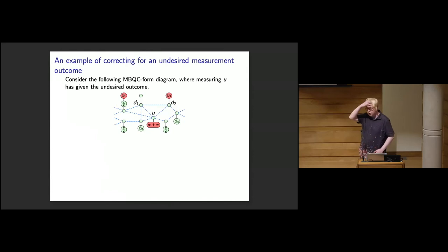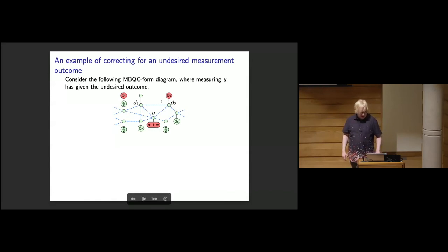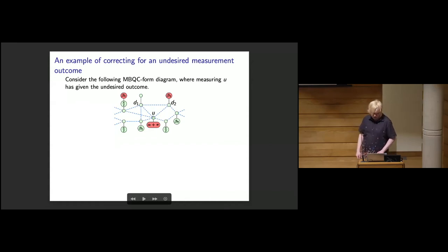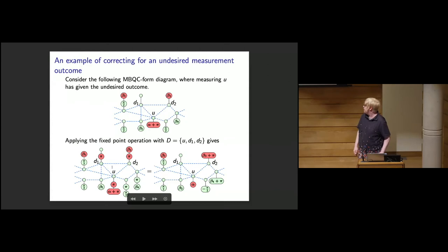We can use this fixed point property to correct erroneous measurements. If we're measuring qubit u with angle alpha and get the undesired outcome — meaning we've measured alpha plus pi — we choose a set D containing u along with correction qubits d1 and d2. Applying the fixed point operation places red pi phases on all qubits in D and green pi phases on all odd neighbors. After simple rewriting, we've corrected u's measurement angle back to alpha, having only changed the measurement angles of the other qubits.